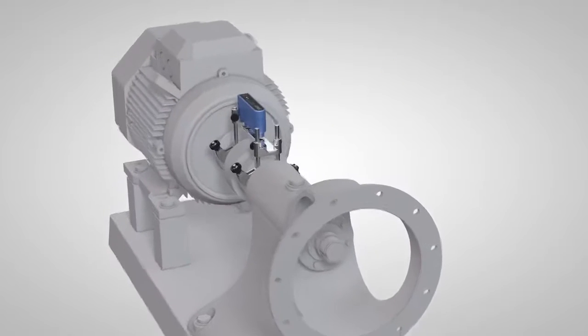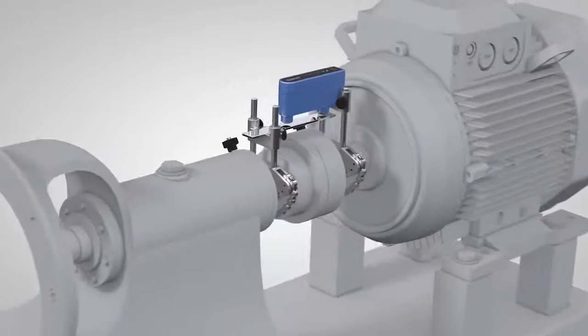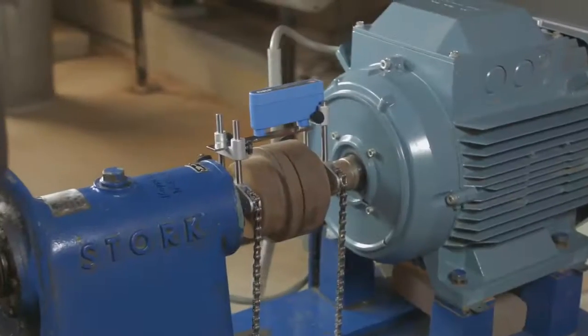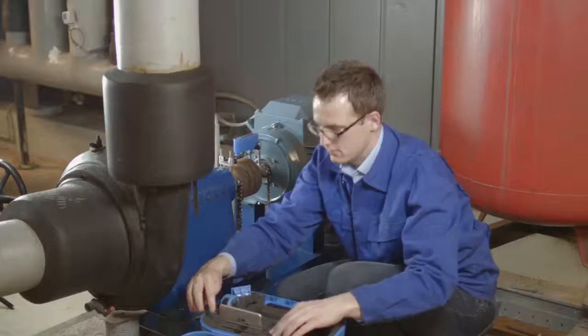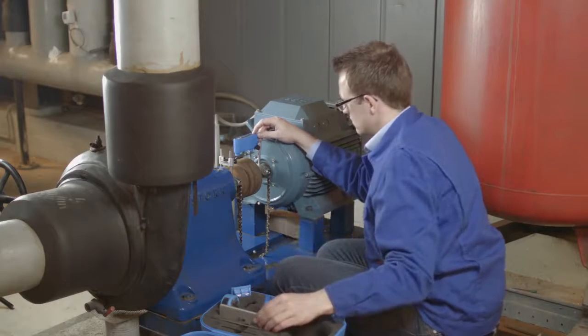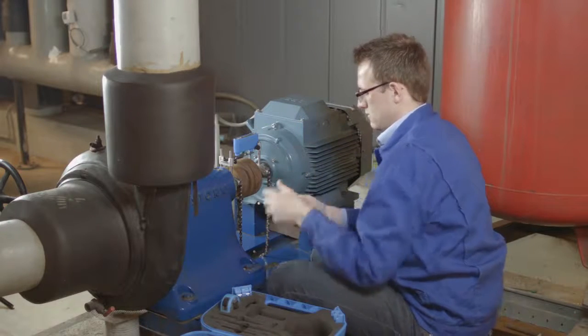To perform shaft alignment on your machines, simply mount the TKSA 11 on both shafts or sides of the coupling. Turn the measurement unit on and start the TKSA 11 app on your mobile device.